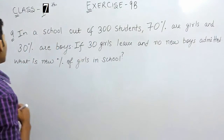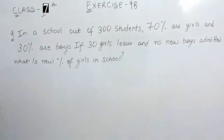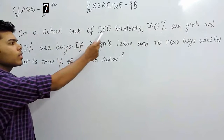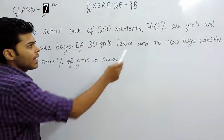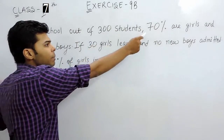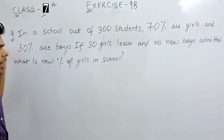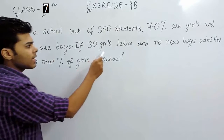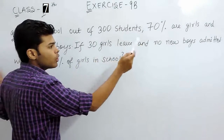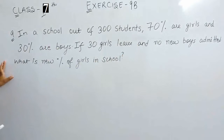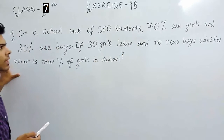Hello students. Now we will solve the 9th question of exercise 9b. In this question we are given that in a school the total strength was 300, then 70% were girls and 30% were boys. If 30 girls leave the school and no new boys were admitted, we have to find the new percentage of girls in the school.